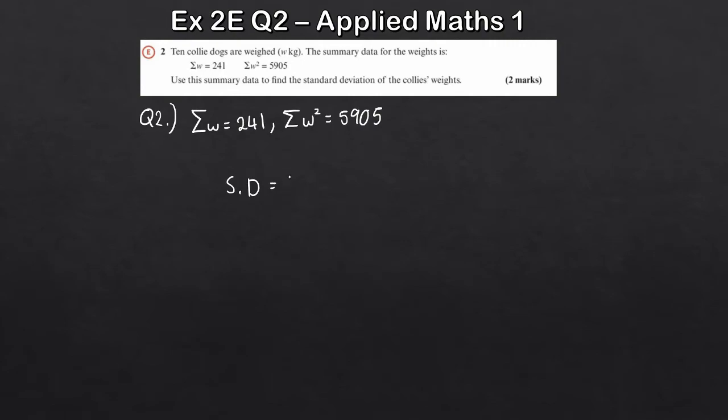So the formula for the standard deviation is given as the square root of the sum, so in the formula book it does in terms of X. Obviously in our case, sigma X squared will be sigma W squared, but don't worry about that too much. We divide that by N and then we subtract the mean of X squared. Now, we've got sigma X squared. We have N, that's 10. The only thing we don't have just yet is X bar.